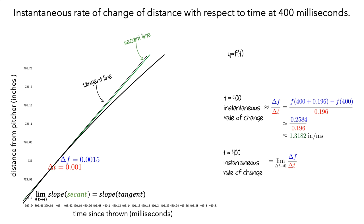This can also be written as the limit as delta t approaches zero of the difference between f of 400 plus the delta t change and f evaluated at 400 divided by the change in time. This is also the definition of the derivative of f evaluated at 400.